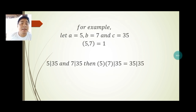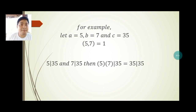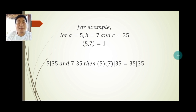Example: let a = 5, b = 7, c = 35. gcd(5, 7) = 1; 5 divides 35 and 7 divides 35, so 5 × 7 = 35 divides 35. That's all for today. We hope you learned something from us. Have a good day.